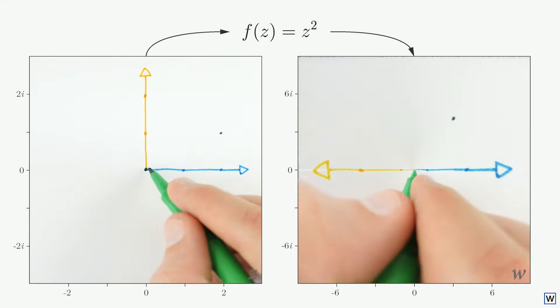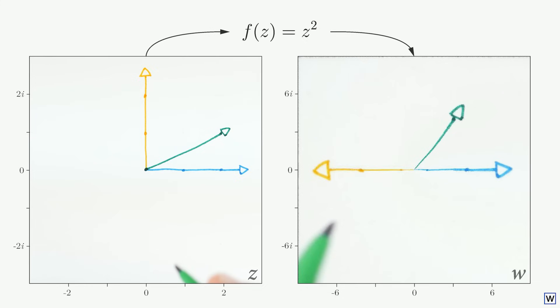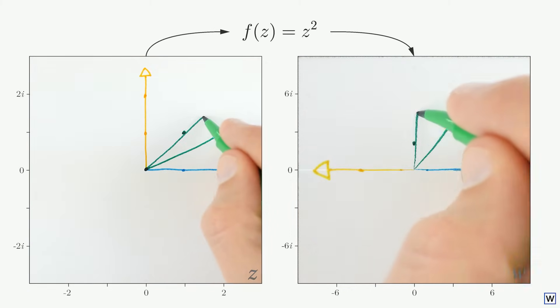If we draw a line like this in our input space, we see that the output is also a straight line, at what looks like double the angle. We can add a few more lines to confirm this trend.